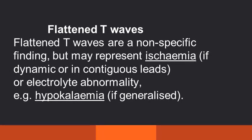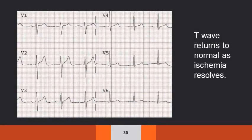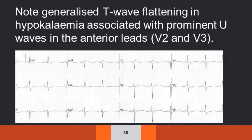Flattened T waves are a non-specific finding, but may represent ischemia or electrolyte abnormality like hypokalemia. Dynamic T wave flattening can occur due to anterior ischemia, and the T wave returns to normal as ischemia resolves. In hypokalemia, generalized T wave flattening is associated with prominent U waves in the anterior leads.